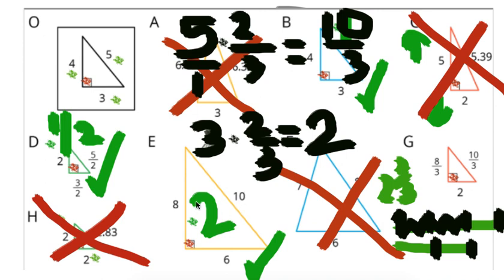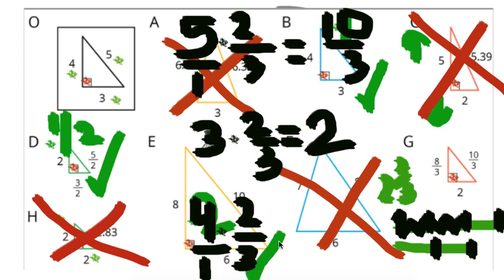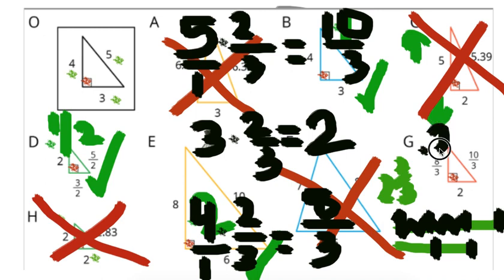And if we do 4 times 2 thirds, that would be like 4 wholes times 2 thirds, which would be 8 thirds. So that checks out. So our scale factor for this one is going to be times 2 thirds.